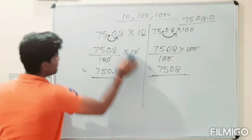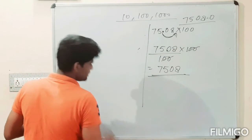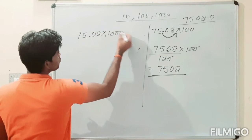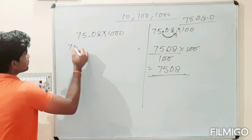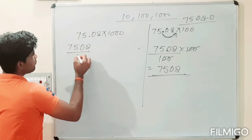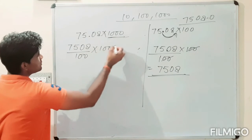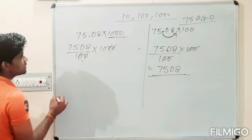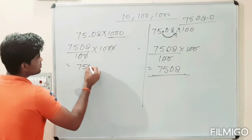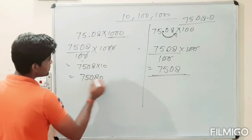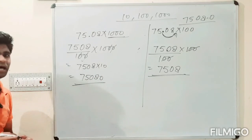If we will multiply this same number by 1000. Look. Have a look. Then change it into the fractional form. We will get this one. And this is the multiplication of 1000. Then 2 zeros cancel out with each other. Then 7508 multiplied by 10. Then we will get 75080. So, this is the required answer.